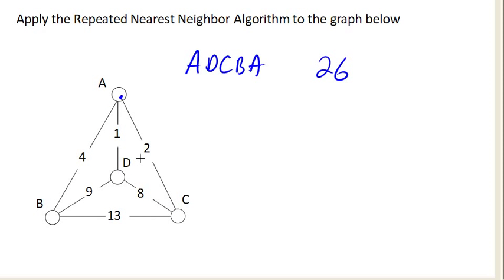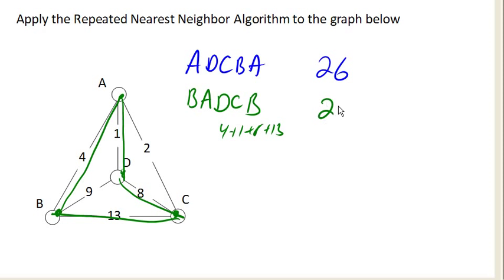Okay, so let's try again. So this time, let's start at vertex B. And from vertex B, our cheapest option is up to A, and from A down to D, and then my only option is this way, and then this way. So we got B, A, D, C, B. And let's see, B, A, D, C, B. That's 4 plus 1 plus 8 plus 13. That's also 26.